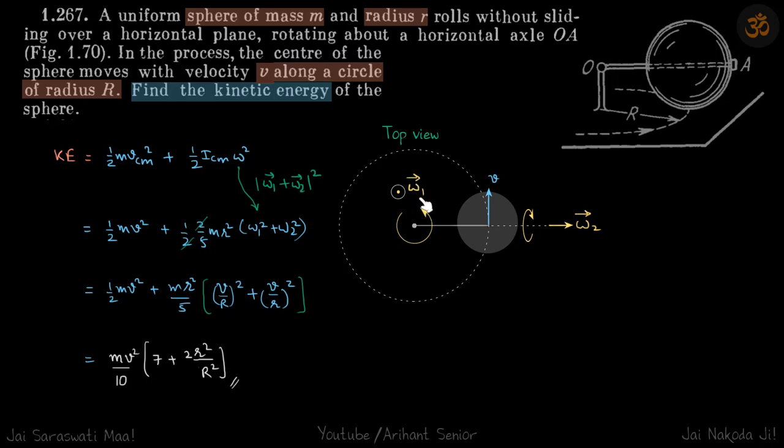The total omega will be the vector sum of omega 1 and omega 2. Because omega 1 and omega 2 are perpendicular to each other, the square of the magnitude is simply ω₁² + ω₂².